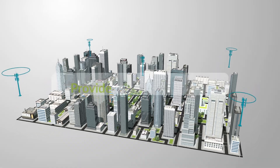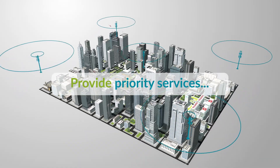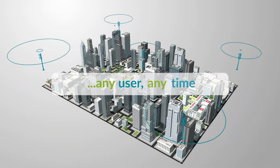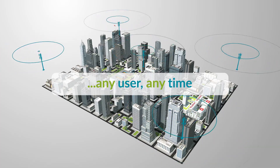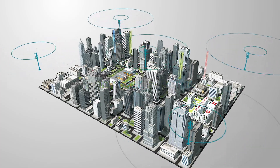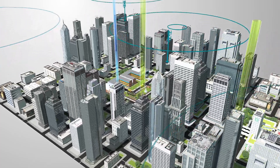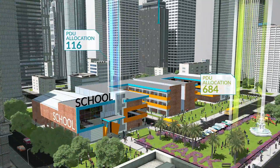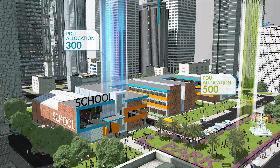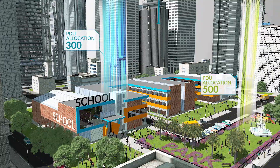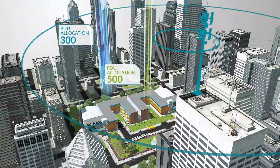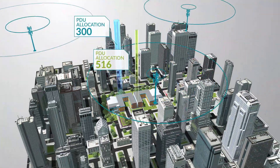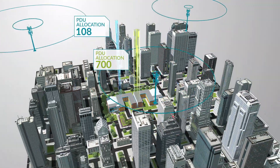Admission control provides priority services for any user type at any time. For example, you could increase the amount of radio resources allocated to schools, specifically at the times when schools are open, and then reallocate them to public users when the schools are closed.